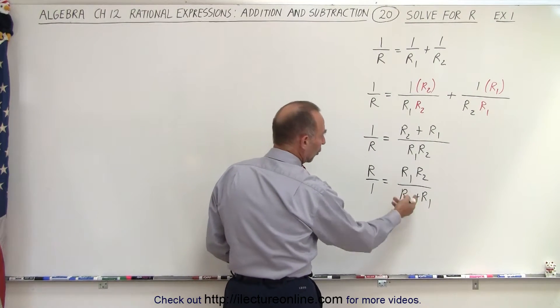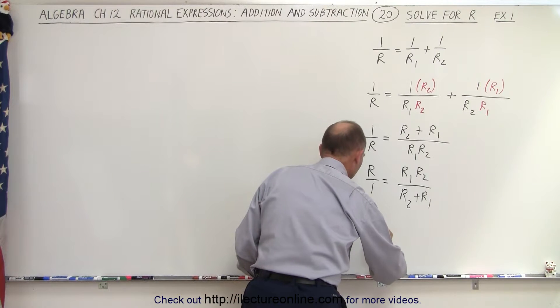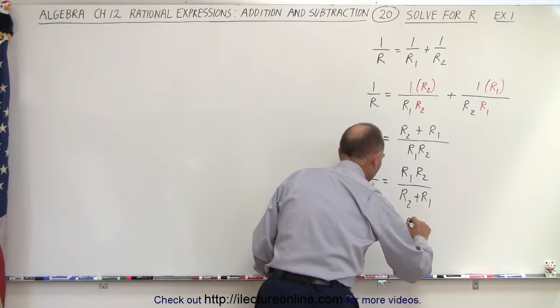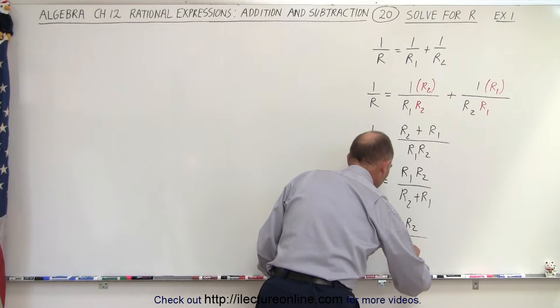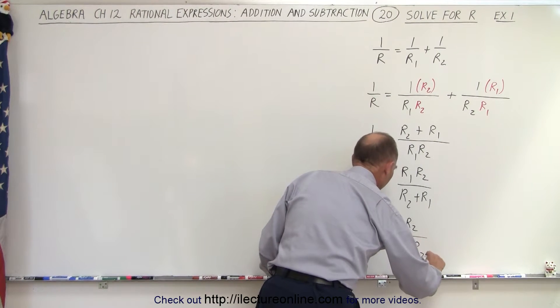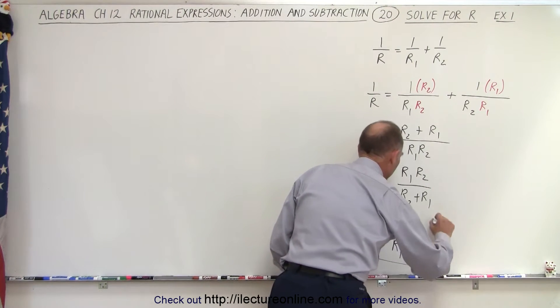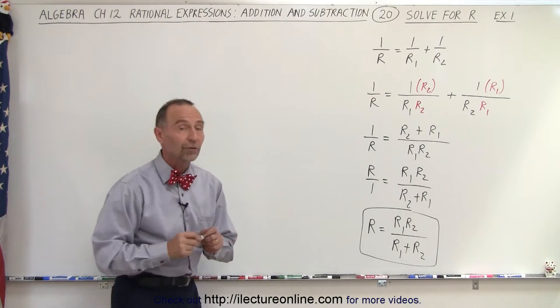We don't need it. And we can change the order of the denominator and write r is equal to the product r1, r2, over the sum r1 plus r2. And there you go. That is how we solved for the variable r.